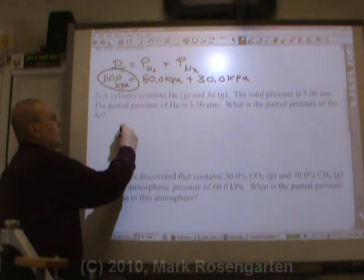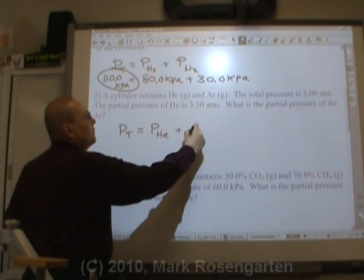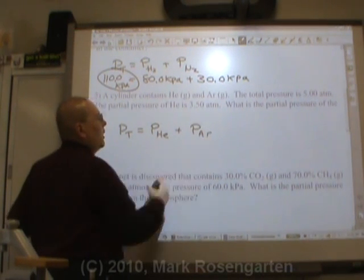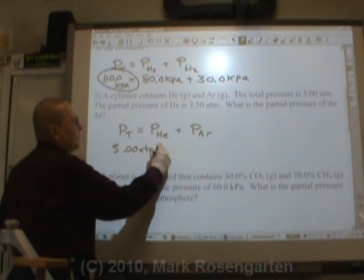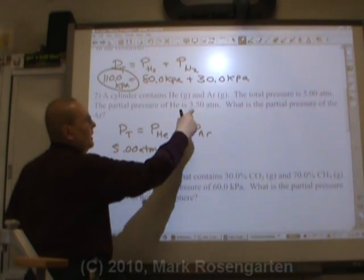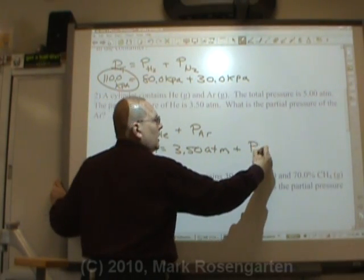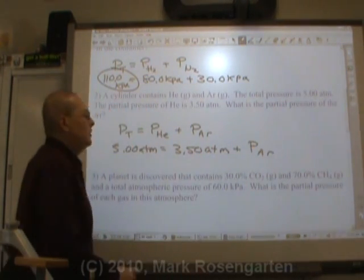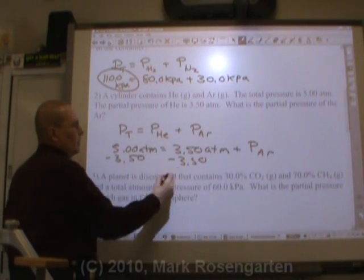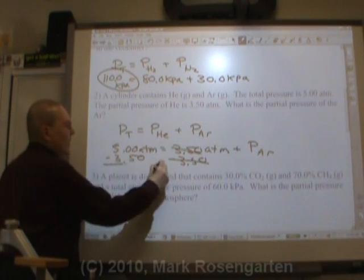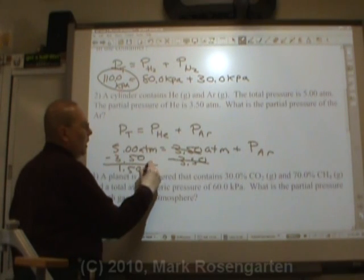Again, very simple. The total pressure of the gas is equal to the partial pressure of helium plus the partial pressure of the argon. Since the total pressure is 5.00 atm, and the pressure of the helium is 3.50 atm, the pressure of the argon is easy to find. Just simply subtract 3.50 from each side. And that leaves you with a grand total of 1.50 atm.